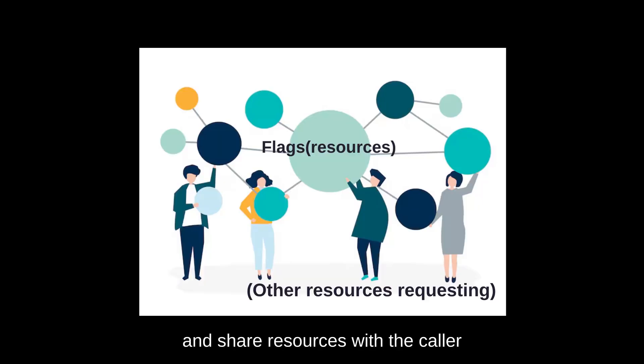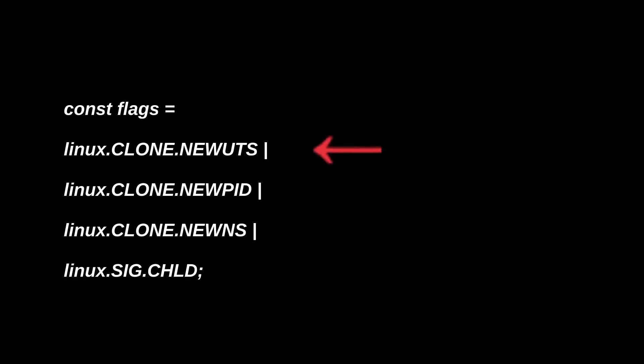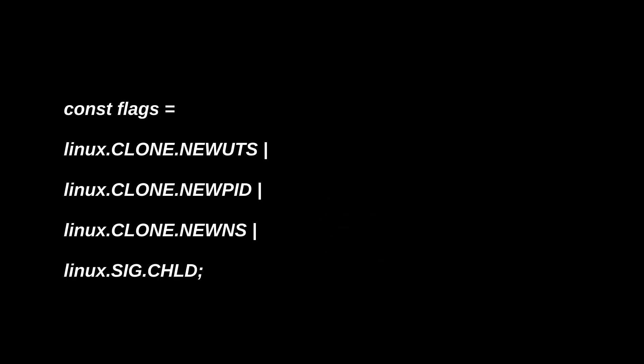Clone works by creating a new process and sharing resources with the caller depending on the flags you pass to it — meaning your process is only allowed to share what you specify. Some of the flags for the container are: new UTS, new PID, new namespace, and SIGCHLD.